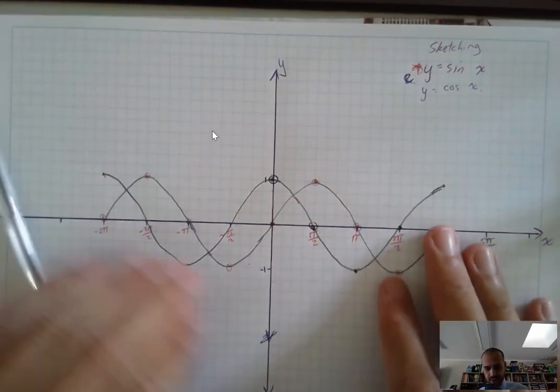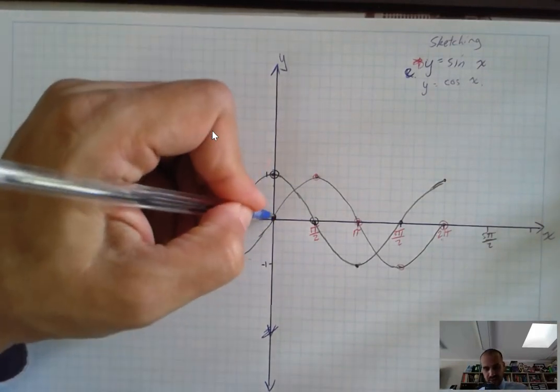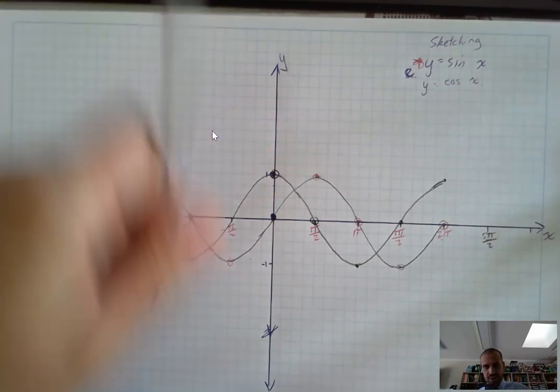Okay. That's y equals sine x and y equals cos x and how to sketch the two of them. Don't get them confused. Sine x starts here, cos x starts there.